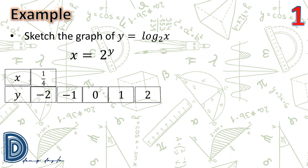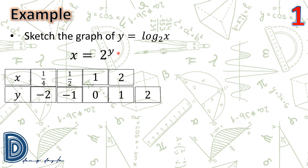If y = −1, then x = 2^(−1) = 1/2. If y = 0, then x = 2^0 = 1. If y = 1, then x = 2^1 = 2. If y = 2, then x = 2^2 = 4.